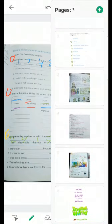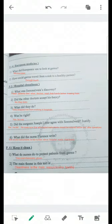Now get back to page, booklet page 19. The rest of the questions in reading comprehension to the second part of the text. First paragraph, European medicine. It's the fourth here, of course. What did Europeans use to look at germs? They used microscopes. How could germs travel from a sick to a healthy person? Through touch.